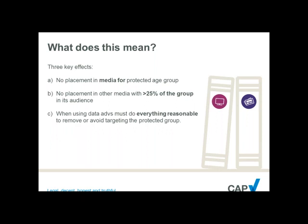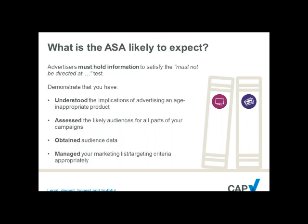The third type of targeting is where advertisers are using data — in offline media, the use of a marketing list to send direct mail; in online media, using account data from social network platforms in order to shape and create an audience for your marketing communication. In that instance, the ASA is going to expect that they have done everything possible to remove or avoid the targeting of the group protected by the particular rule.